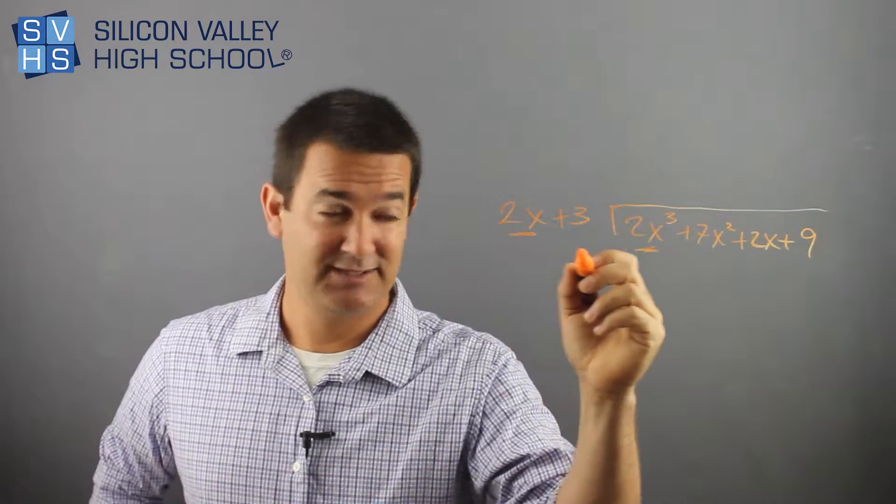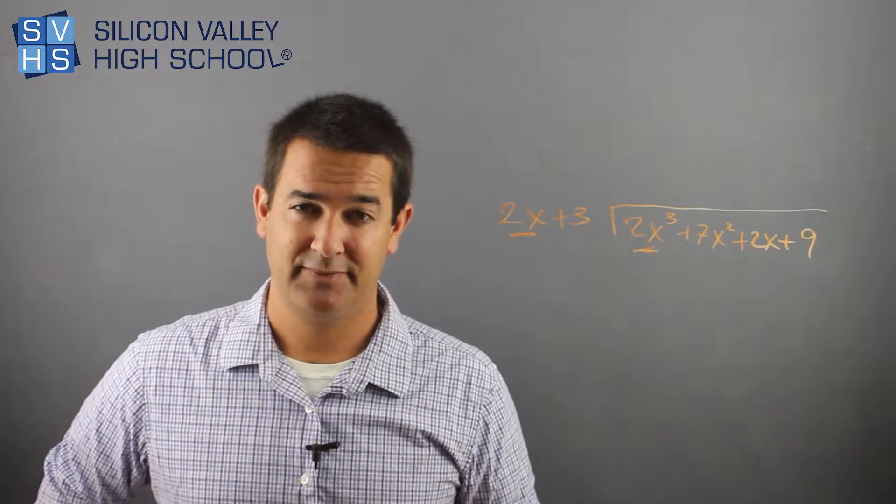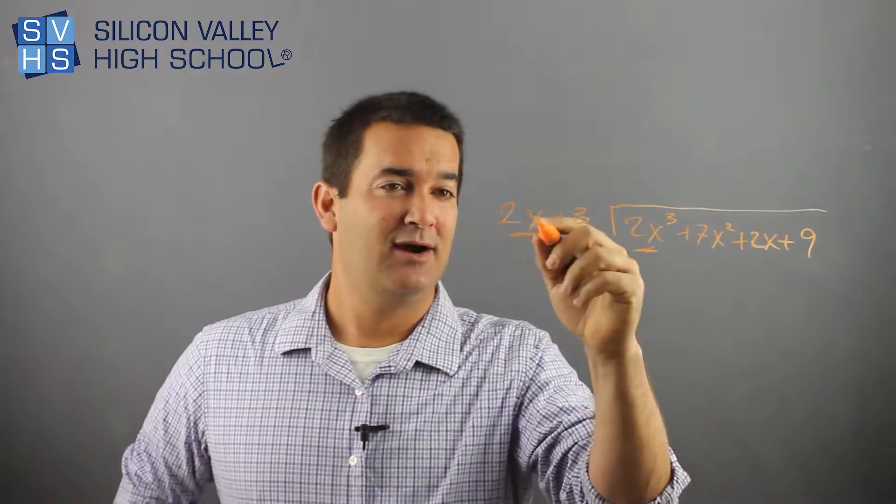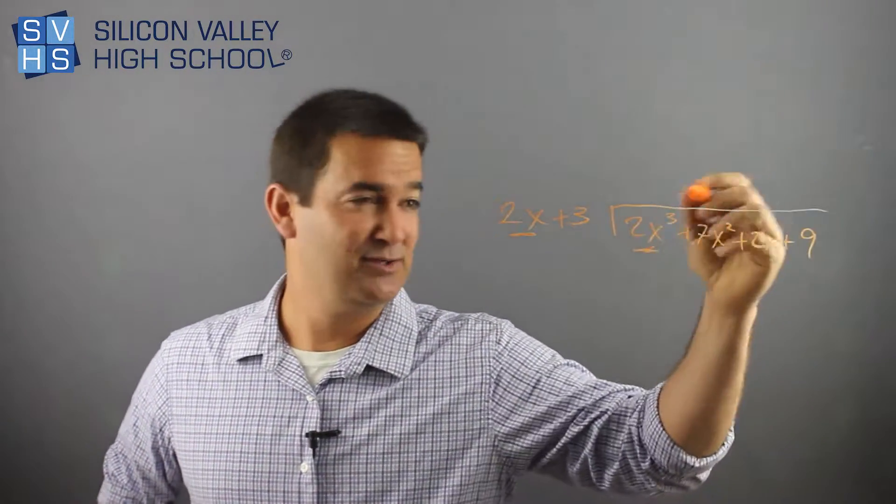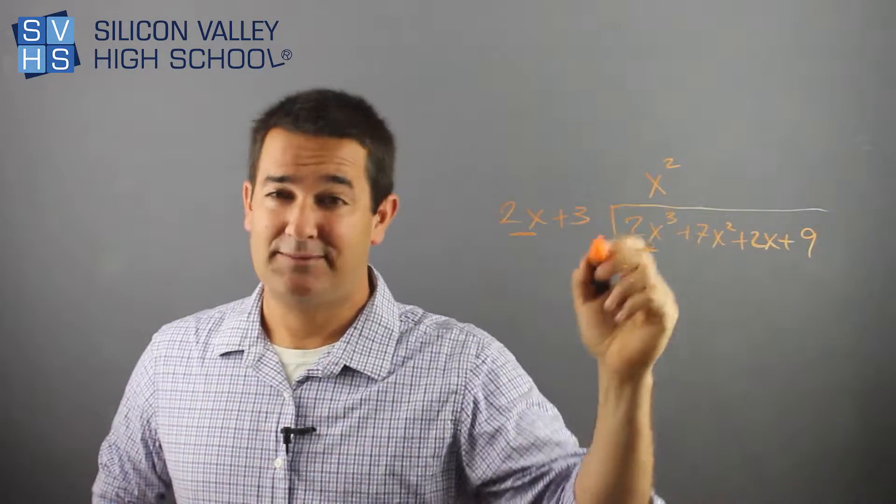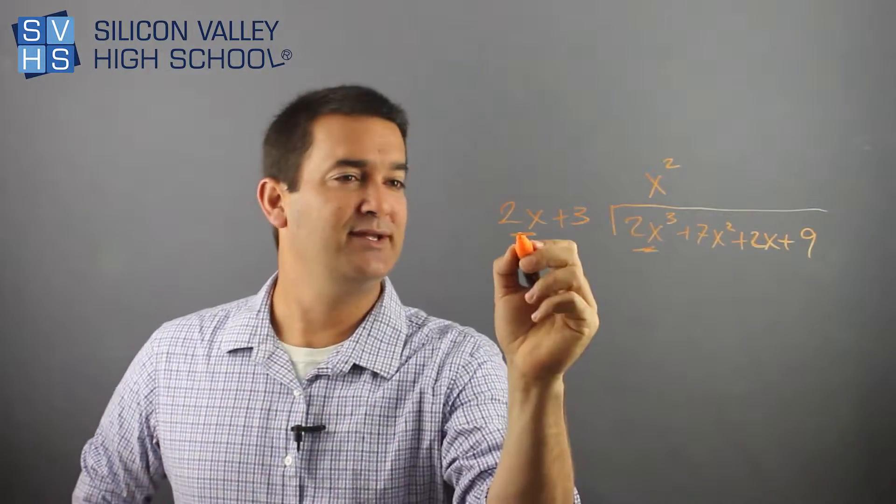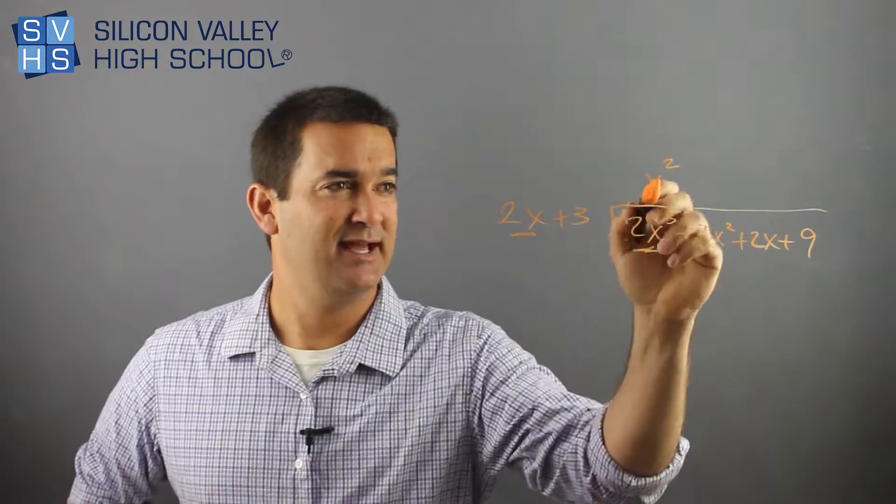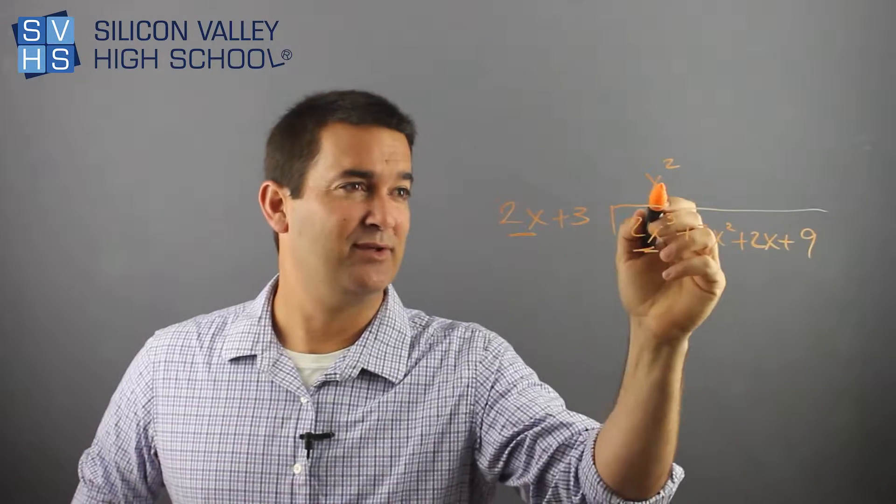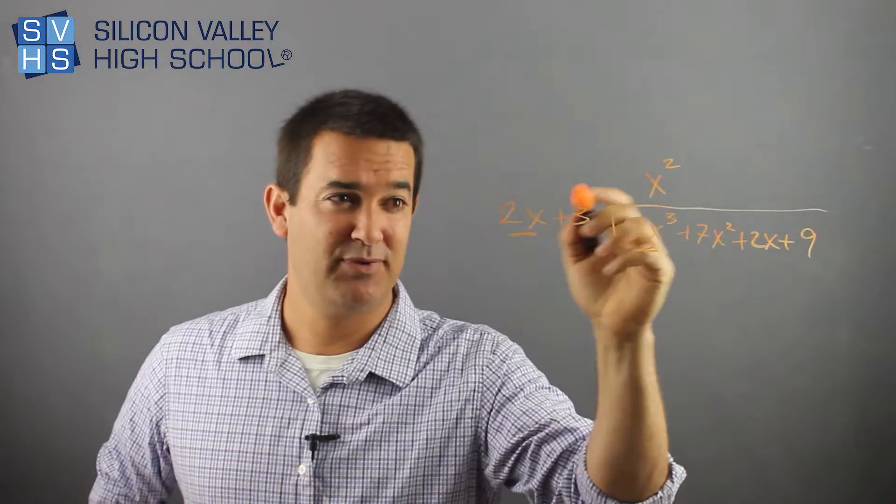So look at this. 2x, what would I multiply 2x by to get 2x cubed? All right, that's not that easy. Let's be honest. I have to think for a second. So 2x times what is 2x cubed? It's going to be x squared. So I know that 2x times x squared is 2x cubed. So now that I only looked at this guy and this guy to get this guy, now I have to bring back the whole, I have to actually look at everyone.